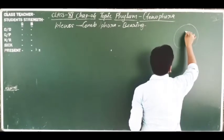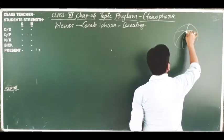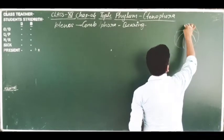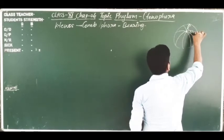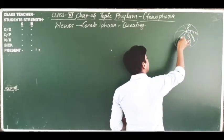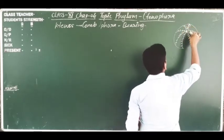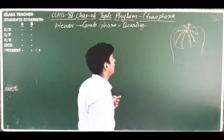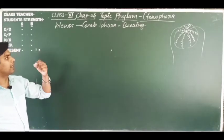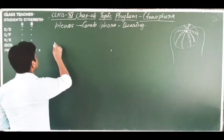In these individuals, eight comb plates are present. Like comb teeth, these eight comb plates are arranged on the body. That is why these individuals are known as ctenophores, and they are placed in the category or phylum Ctenophora.